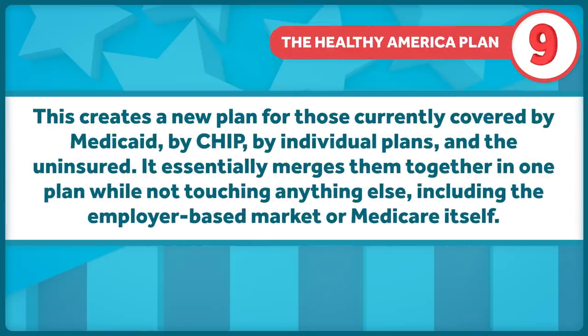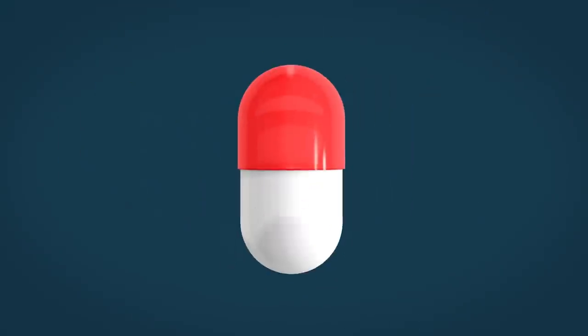There are two other plans worth mentioning. They also attack the problem in different ways and also don't seek universality. The first, the Healthy America Plan, created by employees of the Urban Institute, creates a new plan for those currently covered by Medicaid, by CHIP, by individual plans, and the uninsured. It essentially just merges all of them together in one plan while not touching anything else, including the employer-based market or Medicare itself.